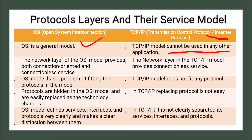The network layer of the OSI model provides both connection-oriented and connectionless services, while the network layer in the TCP/IP model provides only connectionless services.